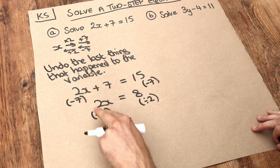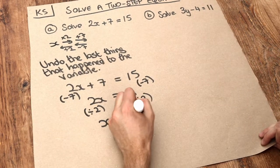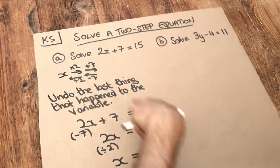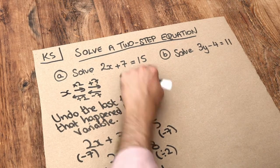That just becomes x, because dividing by 2 cancels out the times by 2. And 8 divided by 2 is 4. Let's check: if we substitute 4 into the original equation, 2 times 4 is 8, plus 7 is 15. That's right.